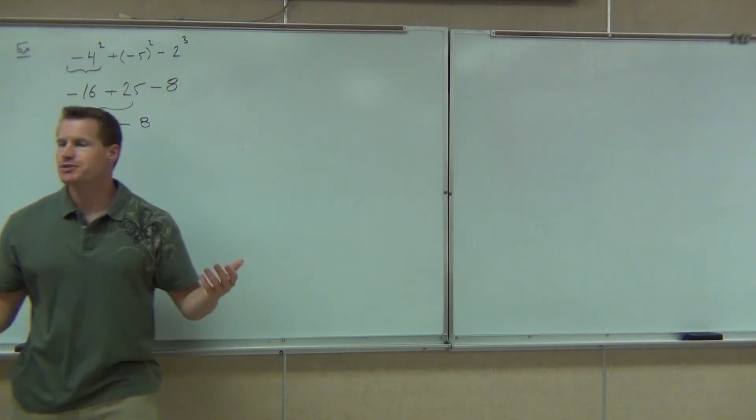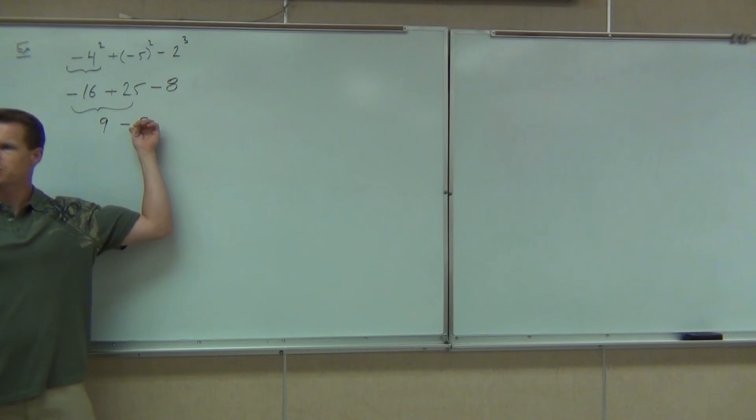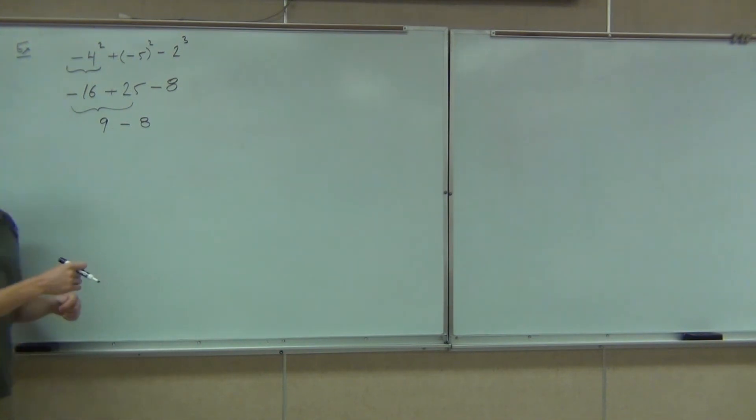Now at this point you have 9 minus 8. You've got a couple options. You can change that to plus a negative. Remember changing to plus a negative? Yeah. Yeah. You could do that if you want to. Or since it's just a bigger number minus a smaller number, you can leave it. I don't care. That's up to you. So 9 minus 8, how much are we going to get there? One. One. One. The whole thing is equal to one. That's kind of weird, right? The whole thing you're working down as one.